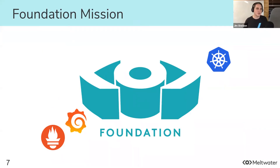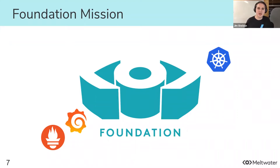Today the focus is on three services: Prometheus, Grafana, and Kubernetes. The hope is to show that if you're already running these services — which work so well together — adding a probe monitoring service is minimal effort with the Blackbox Exporter.